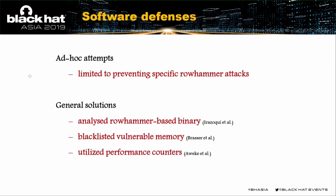The first software sub-category is ad hoc solutions. These solutions are primarily limited to preventing specific Rowhammer attacks that utilize certain system features such as page tables. Page tables are used to translate virtual addresses to physical addresses. However, the pagemap interface has already been disabled for unprivileged users, which was used to facilitate double-sided Rowhammer.